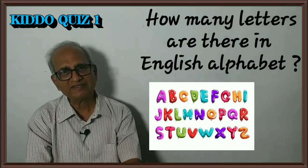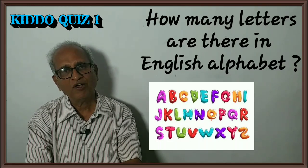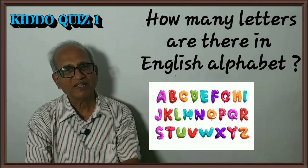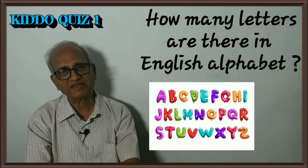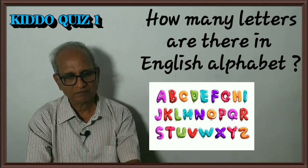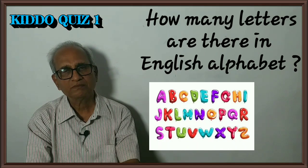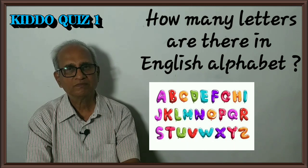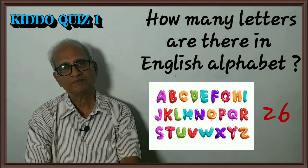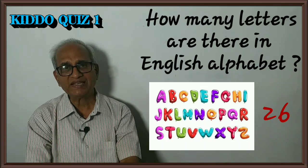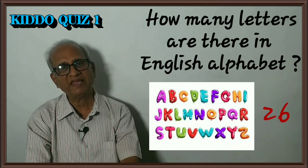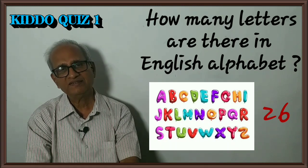Sixteenth question: How many letters are there in the English alphabet, from A to Z? The answer is twenty-six letters. There are twenty-six letters in the English alphabet, starting from A and ending with Z.